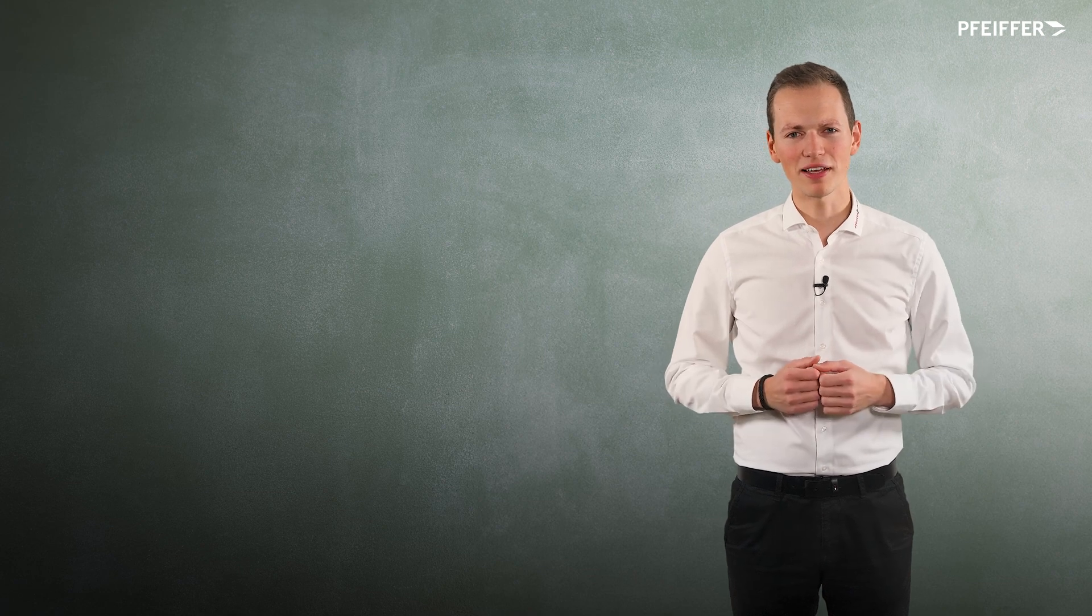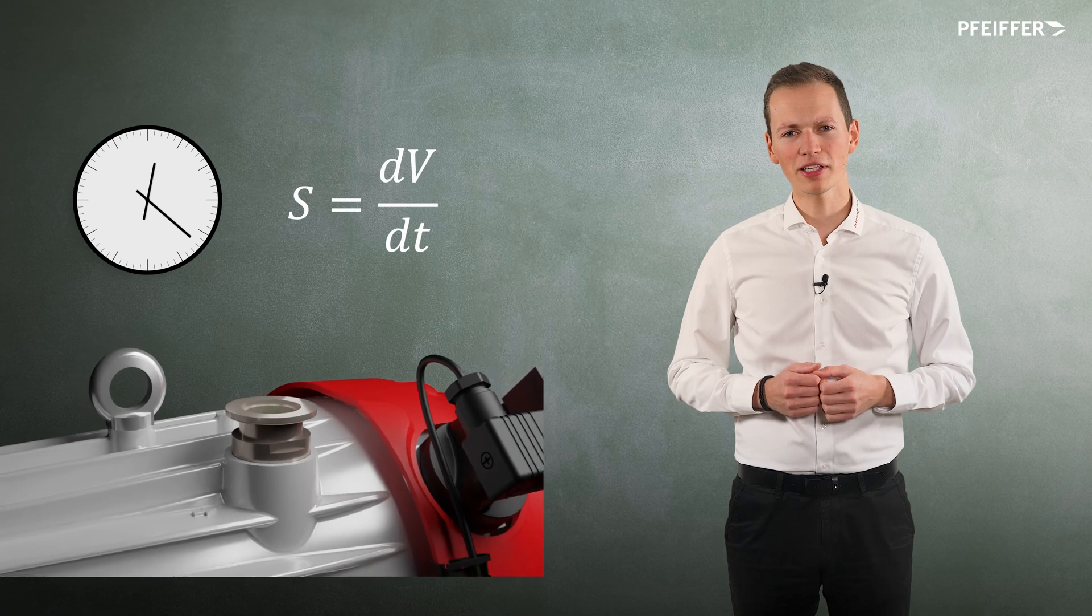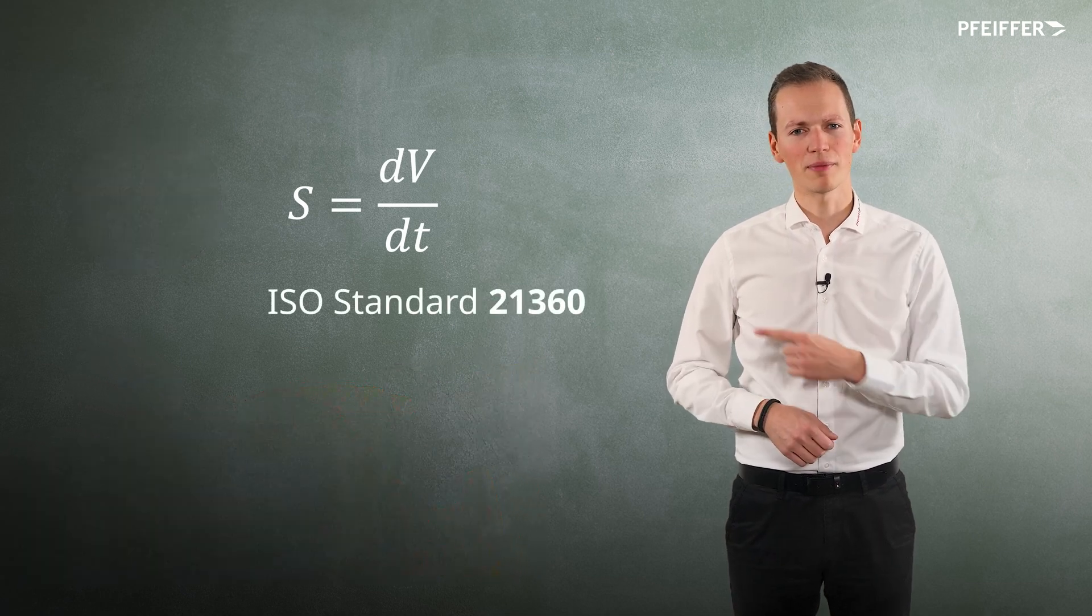Basically the pumping speed S is the mean volume flow through a cross section of the inlet part of a vacuum pump. The exact determination of pumping speed is described in the ISO standard.